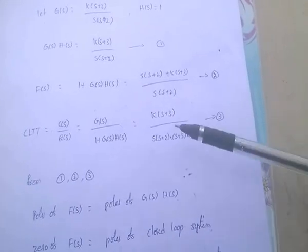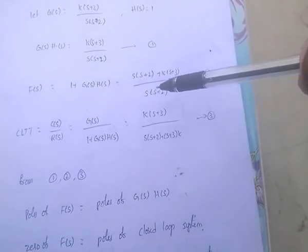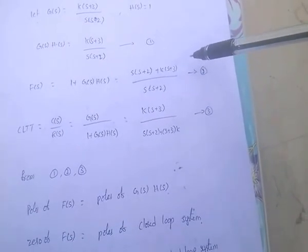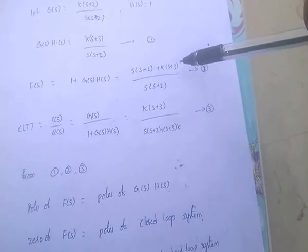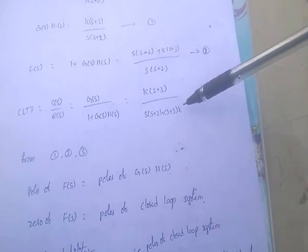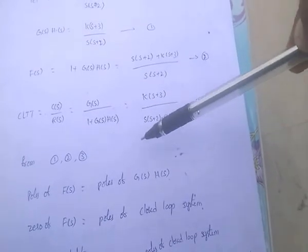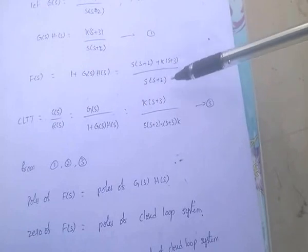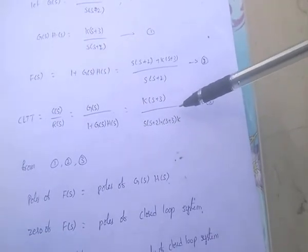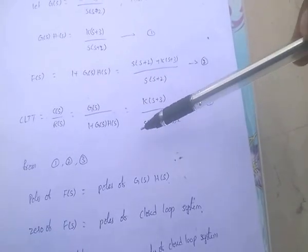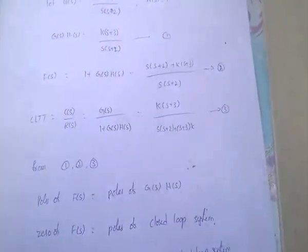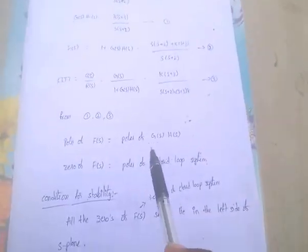The zeros of F(S) are found by setting the numerator equal to zero. The zeros of F(S) are equal to the poles of the closed loop transfer function. These two points are very important: poles of F(S) equal poles of G(S)·H(S), and zeros of F(S) equal poles of the closed loop system.